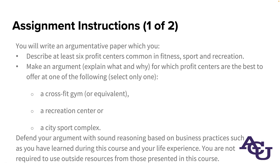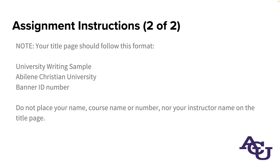The instructions continue: you write an argumentative paper in which you describe at least six profit centers common in fitness, sport, and recreation. Make an argument for which profit centers are the best to offer at one of the listed facilities, and defend your argument with sound reasoning based on business practices such as you have learned during this course and your life experience. You're not required to use outside resources beyond those presented in this course. You should start with a title page following a particular format—in this case, without your name, course number, or instructor's information, which is a house rule change from standard APA style.